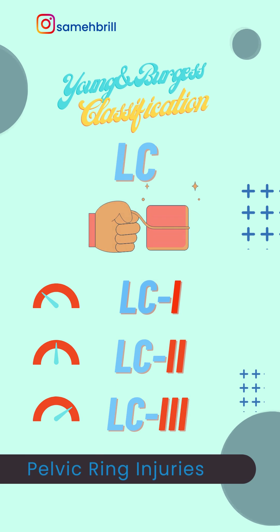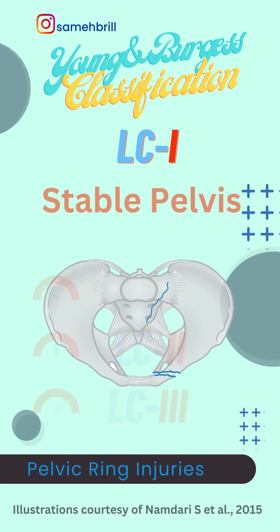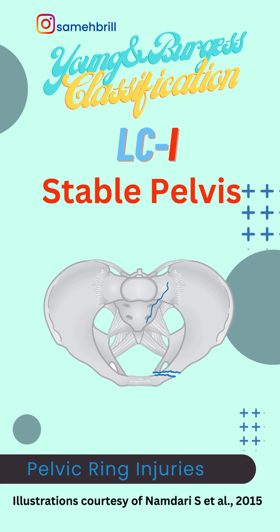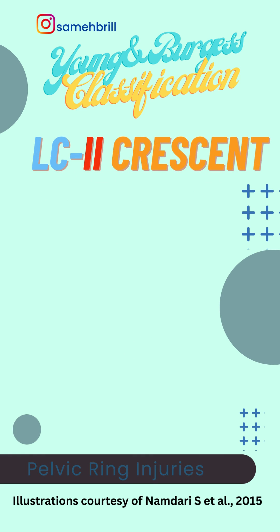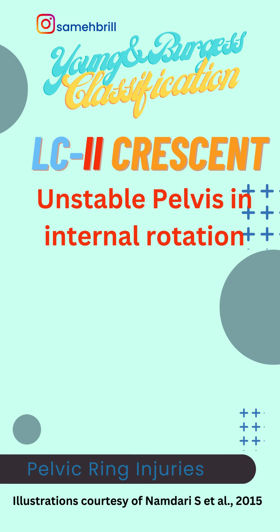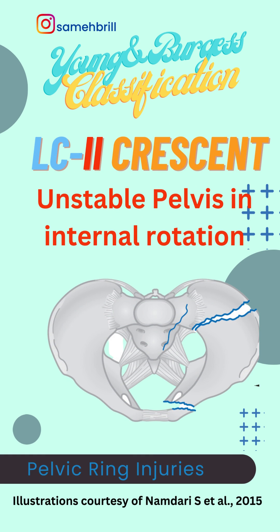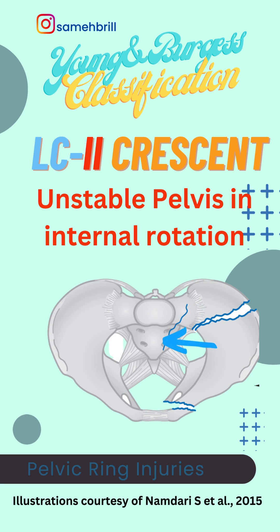In LC1, the pelvis is stable, and we can see an impacted ilium and maybe transverse or oblique fractures of the pubic rami. In LC2, the pelvis is unstable in internal rotation. The compression force will either cause a crescent fracture of the iliac wing, or it's going to disrupt the posterior sacroiliac complex.